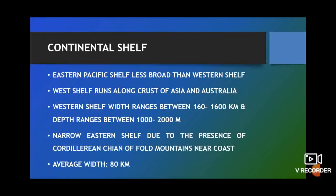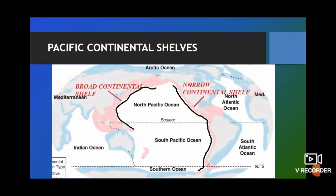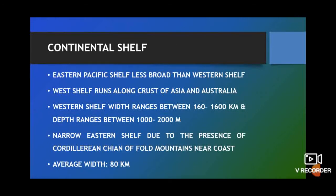There are two continental margins for the Pacific Ocean: the western margin and the eastern margin. The eastern Pacific shelf is less broad when compared to the western shelf. The shelves are very broad and extensive along the eastern coast of Australia and Asia, where the width varies from 160 to 1,600 kilometers and the depth ranges between 1,000 to 2,000 meters. The continental shelves along the western coast of America are narrower due to the presence of the Cordilleran chain of fold mountains along the coastal lands, with an average width of only 80 kilometers.